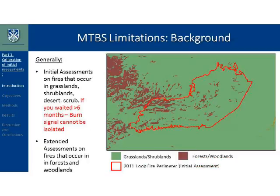Another difference between initial and extended assessments is not only time-dependent but also vegetation-dependent. Generally, MTBS performs initial assessments in fires that occur in grasslands, shrublands, deserts, or scrub — because if you waited longer than six months, the burn signal can no longer be isolated as that vegetation would have already grown back. MTBS performs extended assessments in fires that occur mostly in forests and woodlands. Here's an example: the Lutz Fire perimeter is an initial assessment, and as you can see, most of it is in grasslands or shrublands.